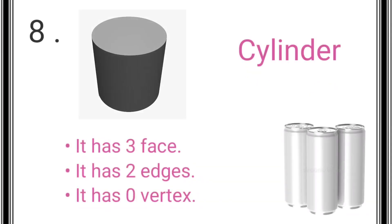The last and eighth shape is cylinder. A cylinder has three faces, two edges, and zero vertices. Example: can.